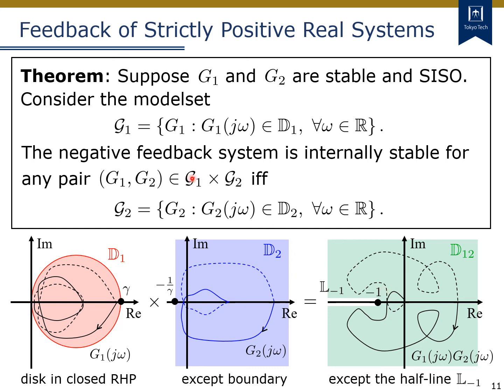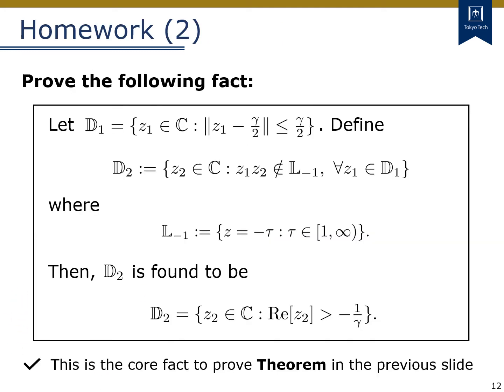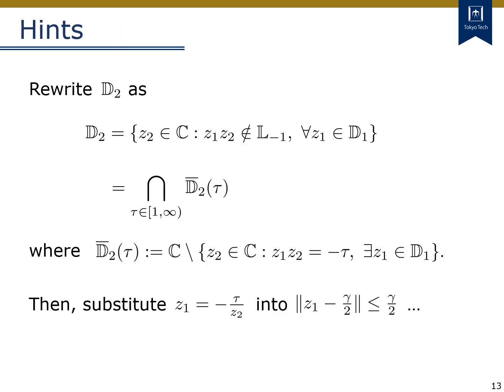Finally, I give you the second homework. This corresponds to the proof of the theorem in the previous slide. Let's try to write down a mathematical proof to show that the domain D2 is obtained as described, when D1 is given as shown. Just for reference, I give here a sketch of the proof as a hint. Please try to follow what these equations represent. Thank you for watching this video.